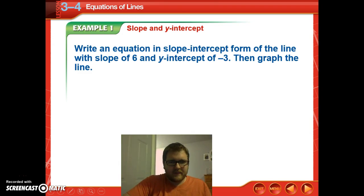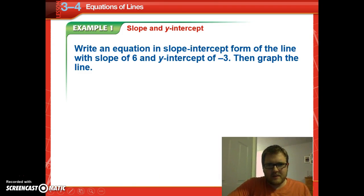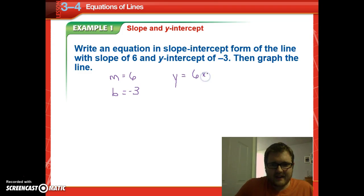So our first example, we want to write an equation in slope-intercept form of the line with a slope of 6 and a y-intercept of negative 3. So my m equals 6, my y-intercept, or b, equals negative 3. So we're going to just go ahead and write this out. y equals 6 times x plus negative 3, or y equals 6x minus 3.